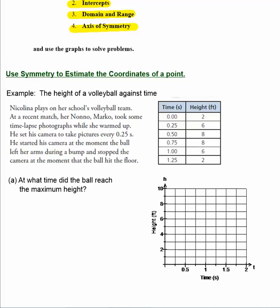This first video, we'll concentrate on finding the vertex. So in our example, we'll use symmetry to estimate the coordinates of a point. The problem is about the height of a volleyball against time. Nicolina plays on her school's volleyball team. At a recent match, her Nonno and Marko took some time-lapse photographs while she warmed up. He set his camera to take a picture every 0.25 seconds. He started his camera at the moment the ball left her arms during a bump and stopped the camera at the moment the ball hit the floor.